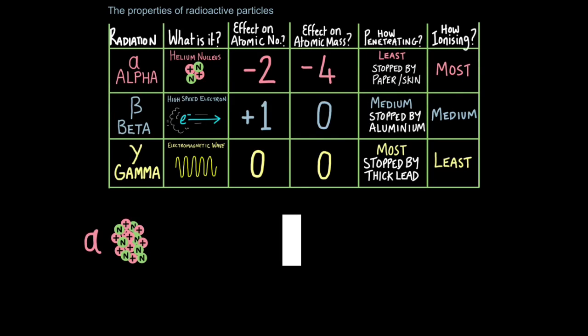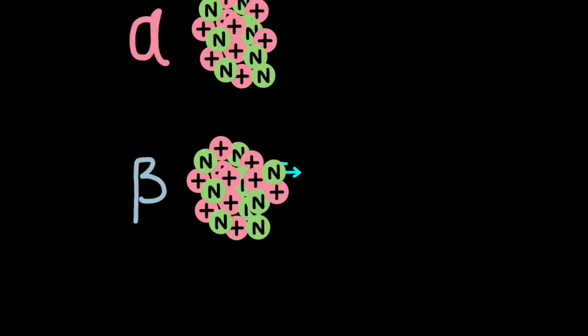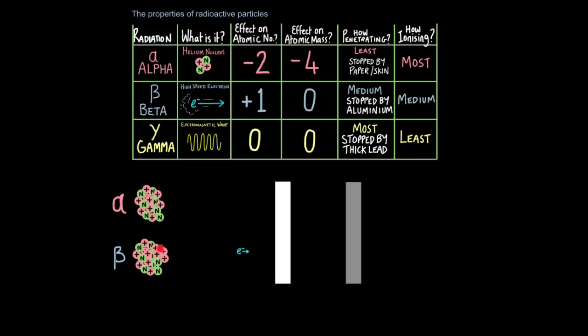Next we have beta radiation. Beta radiation is basically a high speed electron. When a radioisotope decays through beta radiation a neutron breaks down or degrades into a proton and an electron. The proton stays in the nucleus but the electron is fired out at high speed. Now because that neutron has broken down into a proton the atomic number increases by one when something decays because it now has one more proton than it used to.